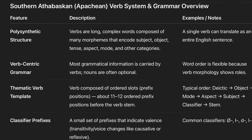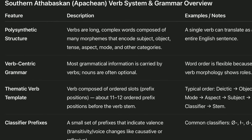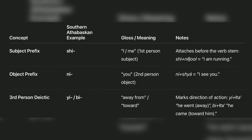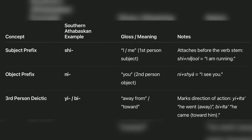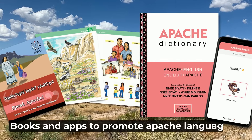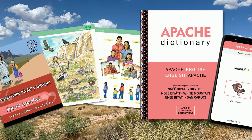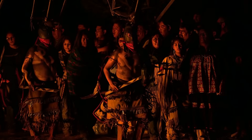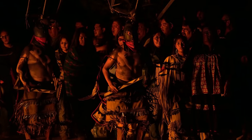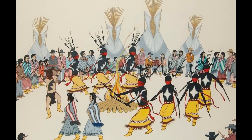The persistence of Apache languages despite centuries of pressure toward linguistic assimilation provides parallel evidence for the cultural mechanisms that preserved genetic heritage. The southern Athabaskan languages spoken by Apache groups maintain complex verb systems and grammatical structures connecting them to their northern relatives, while incorporating vocabulary and concepts specific to southwestern environments. Language preservation efforts in contemporary Apache communities often emphasize the connection between linguistic heritage and cultural identity, recognizing that language carries the conceptual frameworks for traditional ecological knowledge, ceremonial practices, and social relationships.